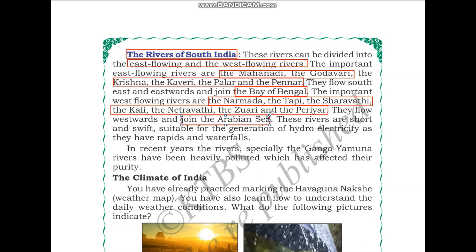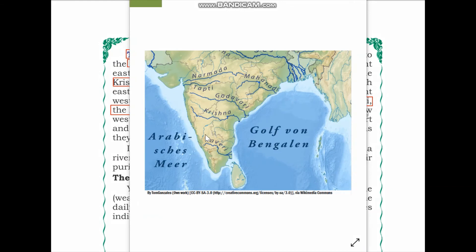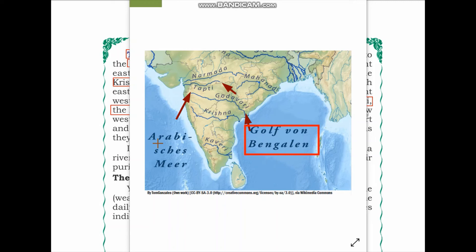Looking at the map, rivers such as the Godavari take birth in the Deccan Plateau and drain into the Bay of Bengal, flowing eastwards. Rivers like the Tapi and Narmada take birth and drain into the Arabian Sea, flowing westwards. In this map, the east-flowing rivers shown are the Mahanadi, Godavari, Krishna, and Kaveri, while the west-flowing rivers are the Narmada and Tapti.